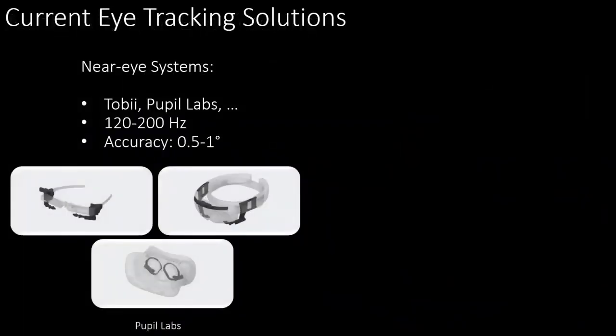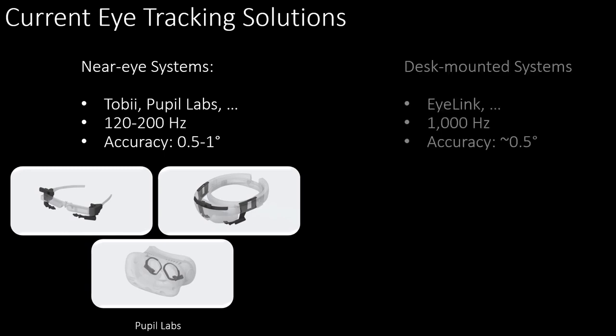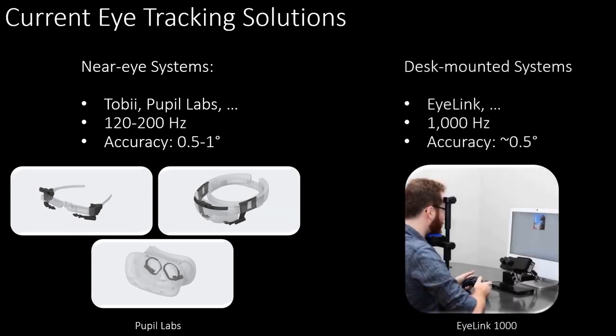Commercial mobile eye tracking solutions are limited to 120 to 200 Hz and accuracies of about 1 degree of visual angle. Desk-mounted systems like the EyeLink 1000 are considered the gold standard, providing about 1,000 Hz and half a degree of visual angle.